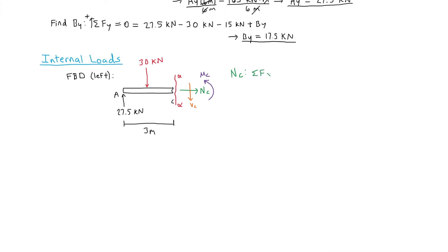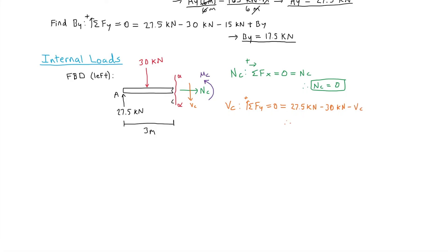For the normal force Nc, summing forces in the x-direction equals zero. There is no applied force in the x-direction, so Nc = 0. For the shear force Vc, summing forces in the y-direction: 27.5 kN − 30 kN − Vc = 0, giving Vc = −2.5 kilonewtons.